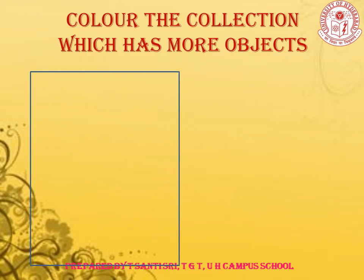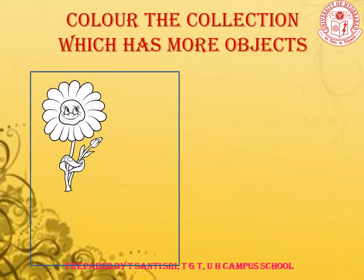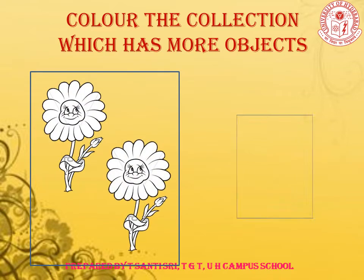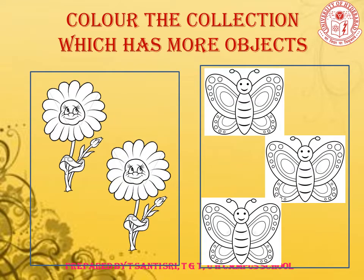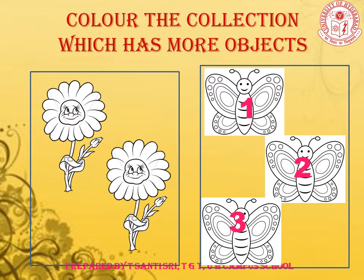Children, here we have flowers in one group and butterflies in another group. Let us start counting the objects in each group: 1, 2 — in the first group we have 2 flowers. In the second group: 1, 2, 3 — we have 3 butterflies. So, 3 is more than 2, and we need to color the 3 butterflies.